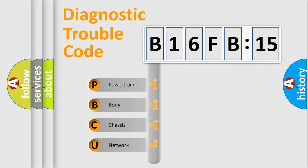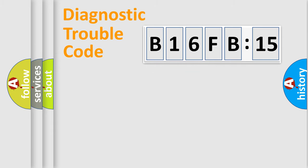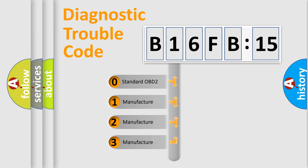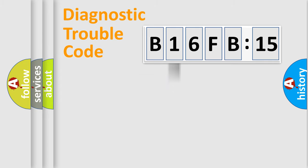If the second character is expressed as zero, it is a standardized error. In the case of numbers 1, 2, 3, it is a car-specific error. The third character specifies a subset of errors. The distribution shown is valid only for the standardized DTC code. Only the last two characters define the specific fault of the group.